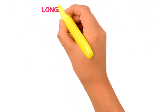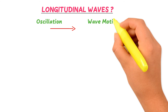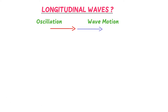Now let me teach you about longitudinal waves. If the oscillations of particles are in the x direction, as well as the motion of the wave, we call it a longitudinal wave. Note that in longitudinal waves, the angle between the oscillations of particles and the wave motion is zero degrees, or they are parallel to each other.